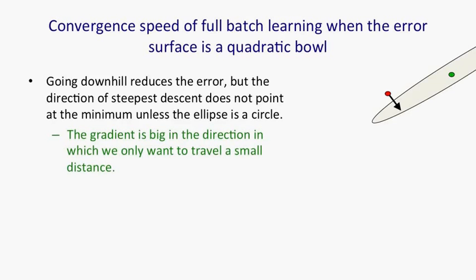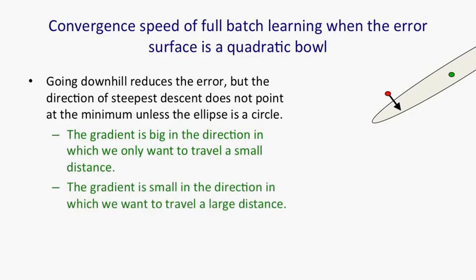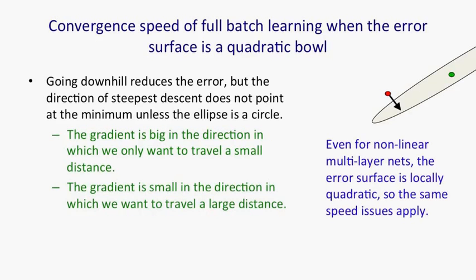We've got a gradient that's very big across the ellipse, which is a direction in which we only want to travel a small distance, and the gradient's very small along the ellipse, which is a direction in which we want to travel a large distance. It's precisely the wrong way around.